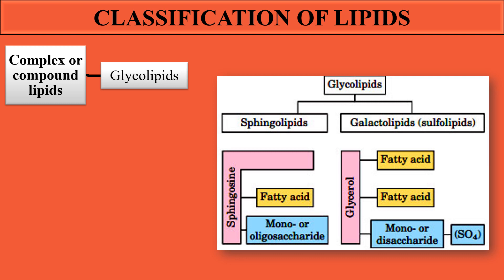Just like phospholipids, glycolipids are also classified into two groups based on the type of alcohol used. If the alcohol is sphingosine, it is known as sphingolipids; if the alcohol group is glycerol, it is known as galactolipids. In sphingolipids, sphingosine with fatty acid forms a simple lipid, and a carbohydrate unit in the form of mono- or oligosaccharide is attached. In galactolipids, glycerol is attached with fatty acids and a monosaccharide or disaccharide. Sometimes a sulfate group is also attached, making them sulfolipids.